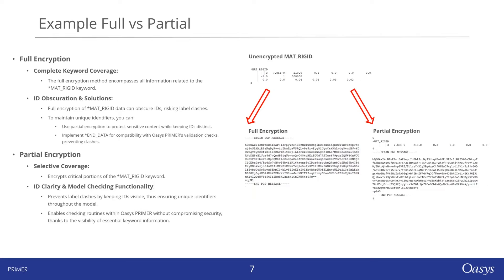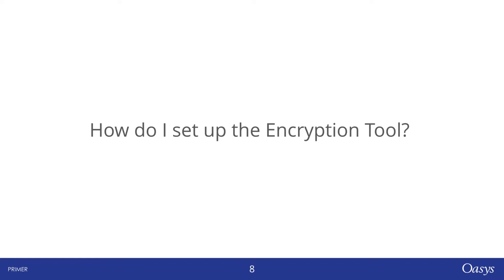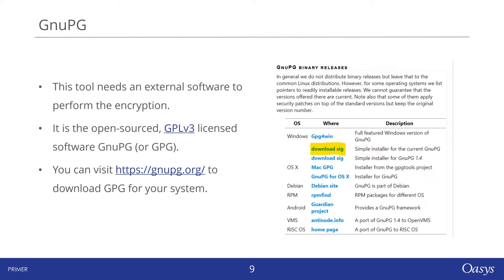How do you set up the encryption tool? To operate the software, you'll require an external tool named NewPrivacyGuard, or GNU-PG for short. It's an open source encryption software, which means we can't bundle it directly with our program. Therefore, you'll need to download it separately by visiting the official GNU-PG website and downloading the simple installer for GNU-PG.